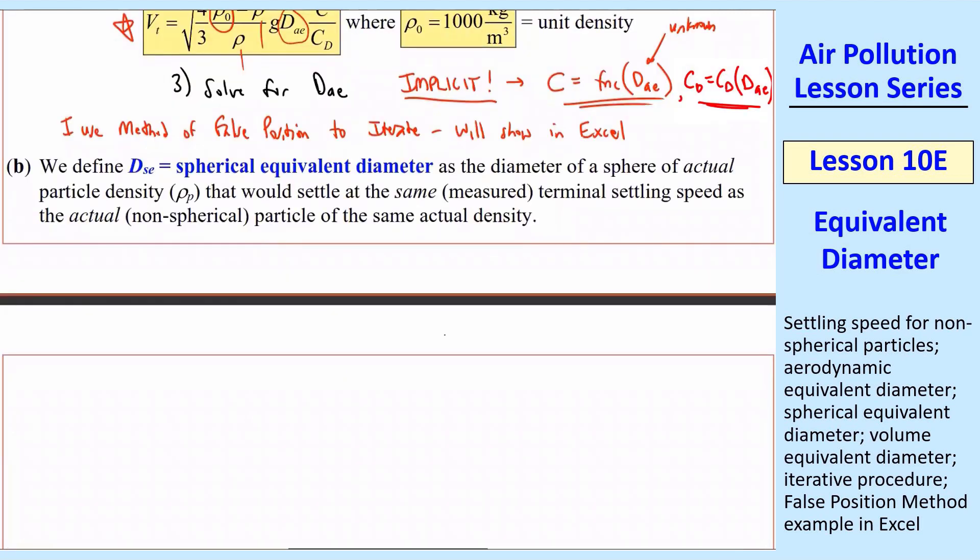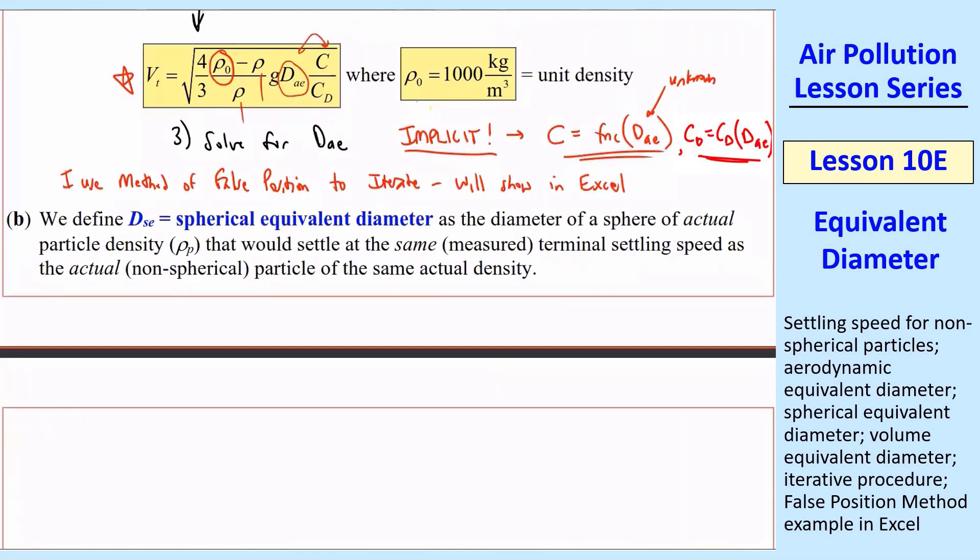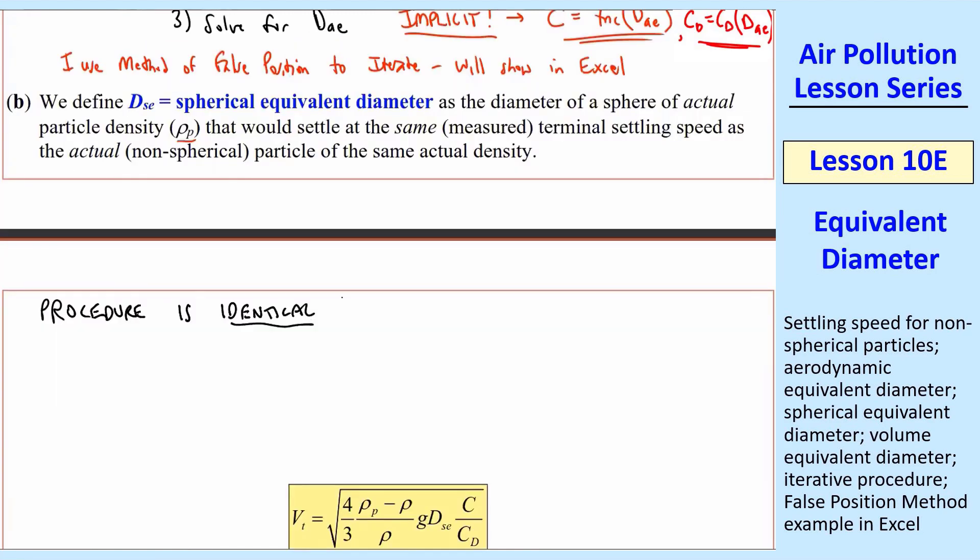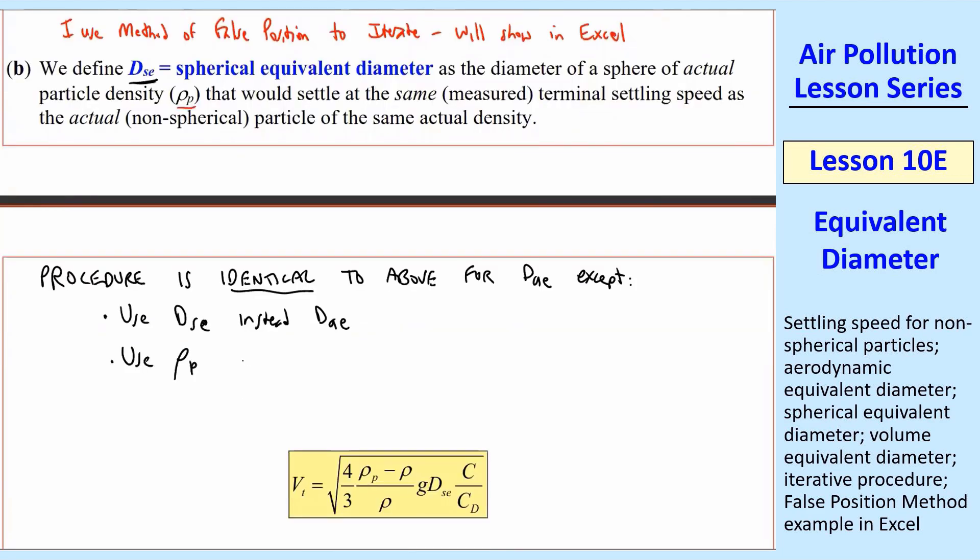Before I do any of these calculations, I just want to give the definitions. The next one is dₛₑ, which is spherical equivalent diameter. That's the diameter of a sphere of actual particle density that would settle at the same measured terminal settling speed as the actual non-spherical particle of the same actual density. If you compare these two, the only thing different is the density. Here we set the density to 1000 kg/m³ unit density. Here we use the actual ρₚ of the particle. So the procedure is identical to above for dₐₑ, except the notation is different. We use dₛₑ instead of dₐₑ, and we use ρₚ instead of ρ₀. In other words, we use the actual particle density.